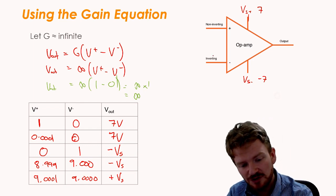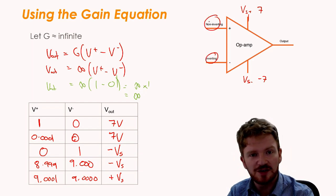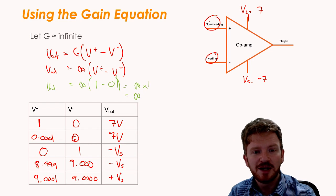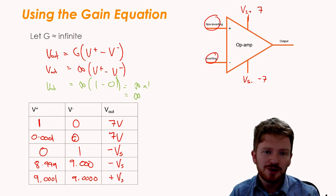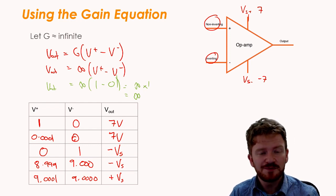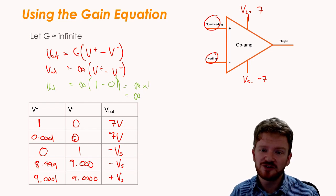So maybe you can start to see why I call this the inverting and the non-inverting. Basically, if the inverting input is larger, the output becomes negative. It's inverted. If the non-inverting is larger, the output isn't inverted. It's still positive. So that's why we name them the way we do.